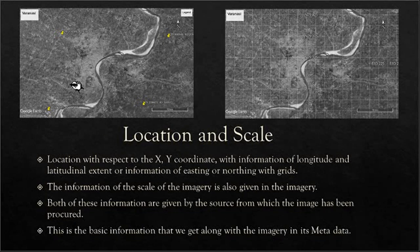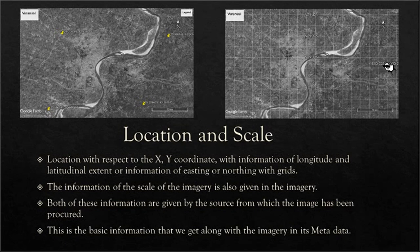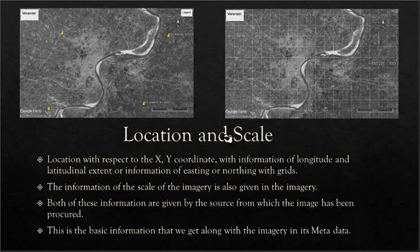Here you can see a Google Earth imagery with information about the latitude and longitudinal extension. In the same imagery we can also have information about the location in a grid pattern, and in each grid we have information about the latitudes and longitudes — northing and easting. In both of these imageries there is a scale given along with the information of latitudes and longitudes. These are the fundamental characteristics of the imagery, and our interpretation process begins with the analysis of these two fundamental elements.